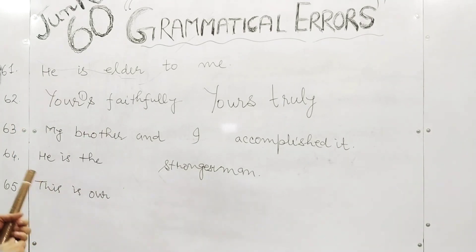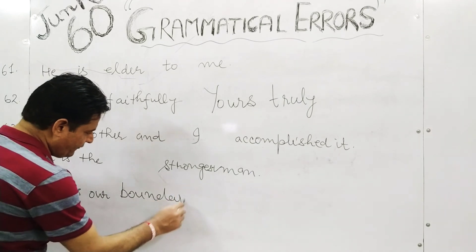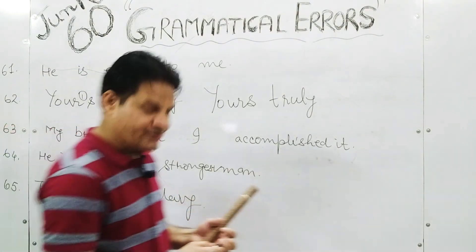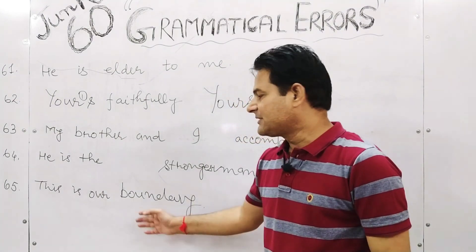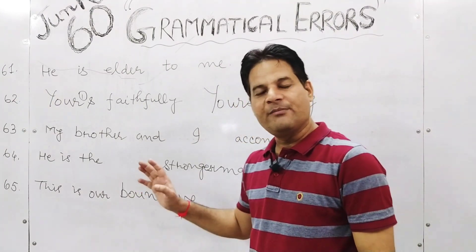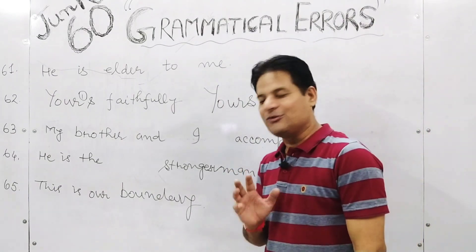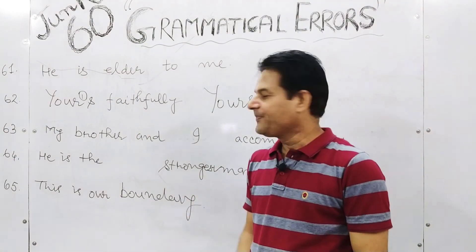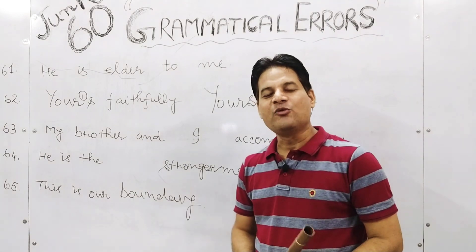Sentence 65: 'Boundaries' — this word does not exist in correct usage here. Use 'boundary.' The correct form is B-O-U-N-D-A-R-Y, 'boundary.' You can also say 'limits.' Do not use 'boundaries' — use 'boundary.' So this is our boundary. We have finished with 65 sentences and now let us move on.